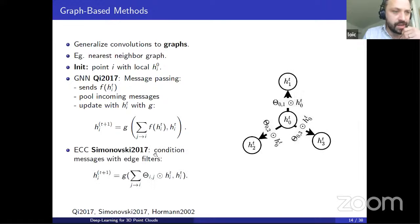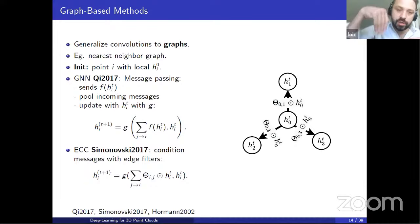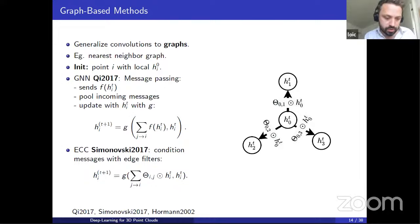One particularly relevant idea for 3D point clouds is Martin Simonovsky's edge filters: the messages sent by points depend on edge features. A point sends a different message to a close neighbor than to a far one, and a different message in the upward direction than the downward direction. This is important because for 3D point clouds you have a graph embedded in 3D space, so it's really important to consider the spatial relationship between points when sending messages.